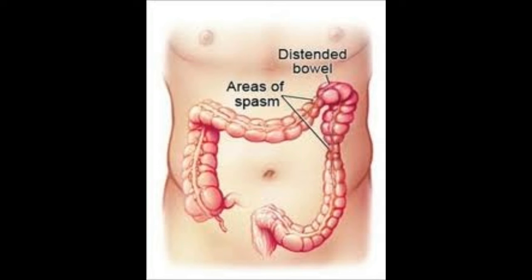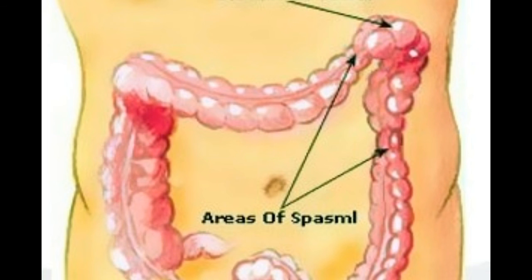Much like splenic flexure syndrome, distension can cause a great deal of pain with possible additional symptoms of fever, rapid heart rate, and a palpable mass in the abdomen. Treatment involves resolution of the underlying cause as well as decompression with a rectal tube, colonoscopy, or occasionally surgery.